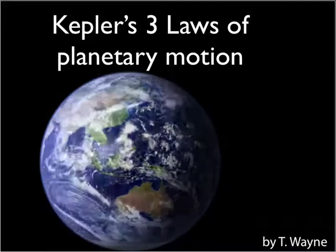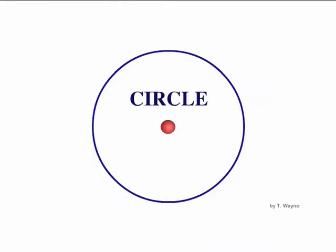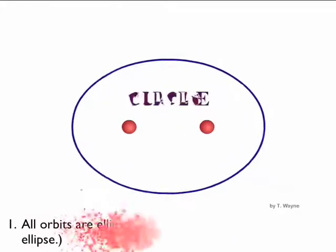This video is going to provide a quick summary of Kepler's three laws of planetary motion. The first law says that all orbits are ellipses.